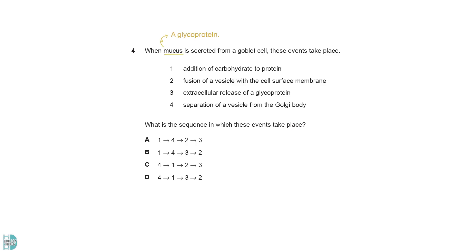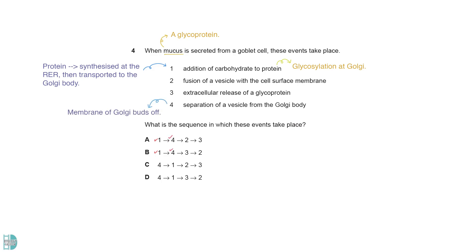The membrane is a glycoprotein. After the protein component is synthesized at the rough ER, it is transported to the Golgi body. Glycosylation of the protein would take place. Then the membrane buds off from the Golgi to form a secretory vesicle. The vesicle will move towards and fuse with the cell surface membrane. The content of the vesicle is then released via exocytosis.